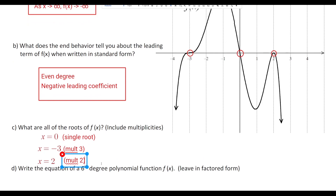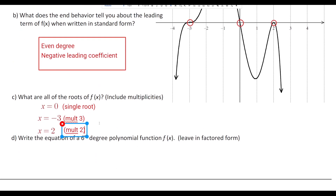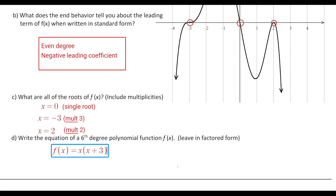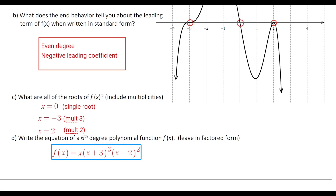Part d asks us to write the equation in factored form. We have x = 0 as a single root, so one factor is just x. A root of −3 with multiplicity 3 gives (x + 3)³. A root of 2 with multiplicity 2 gives (x − 2)². The y-intercept is zero, so we don't need to modify that.